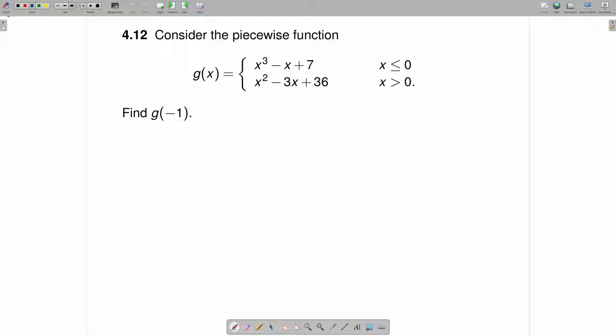Consider the piecewise function g of x is equal to x cubed minus x plus 7 for x less than or equal to 0, and x squared minus 3x plus 36 for x greater than 0. Find g of negative 1.